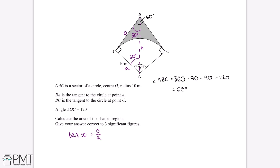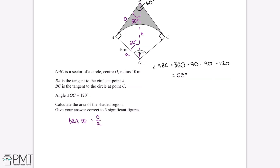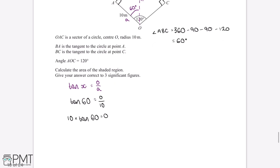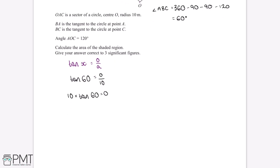The opposite side is the side we want to work out, and we already have the adjacent side, so we can substitute in our values. The angle we're using is 60, so tan 60 equals opposite over 10. This means length AB equals 10 multiplied by tan 60. Putting this into our calculator tells us that the opposite side is equal to 10√3.